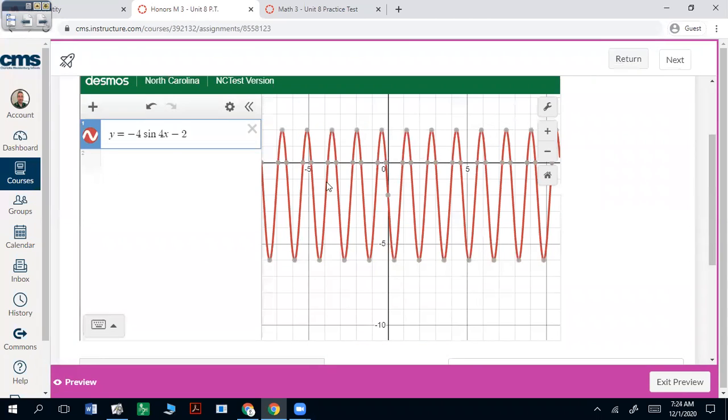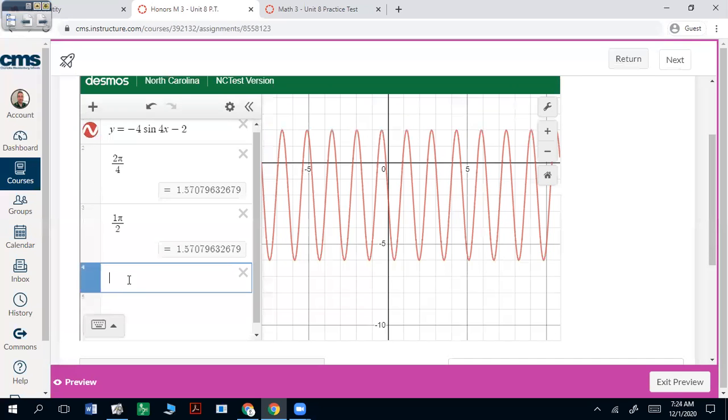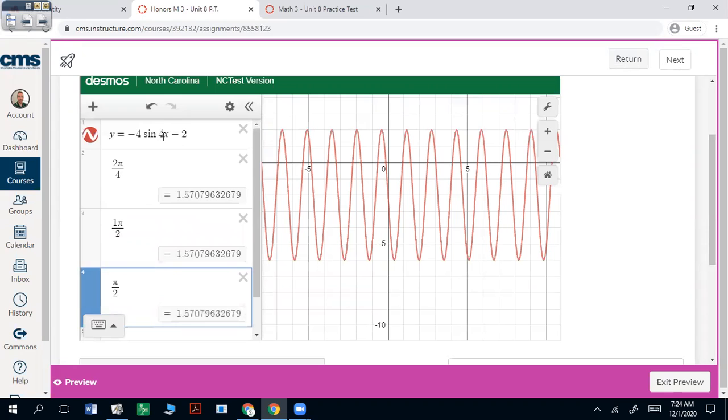Period is 2 pi over b. So 2 pi over 4. That reduces to pi over 2. So you always take your 2 pi divided by your b value. So pi over 2 would be your period.